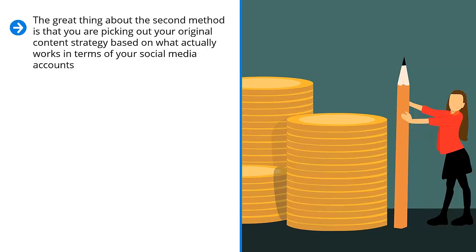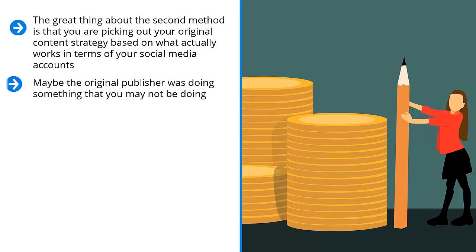You have to understand that even though high-quality third-party content may have a lot of objective social signals, those signals may have been generated in different contexts. Maybe the original publisher was doing something that you are not doing. Still, you can definitely do the first method if you're in a hurry. But if you have some time to spare, you might want to try the second method.